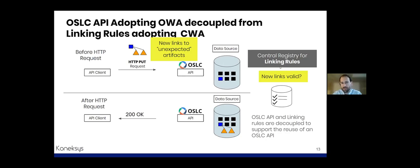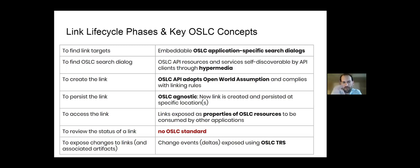If OSLC APIs support the open world assumption, they can be reused more easily in different contexts. Often I see linking rules and OSLC API implementations all combined, which is not ideal. We've covered just a few steps of the lifecycle of a link — from when a human user wants to search for link targets to the open world assumption nature of an OSLC API. There are additional steps in the link creation process, and next to them you can see the unique aspects of an OSLC API that make it work.